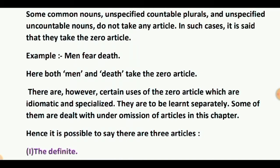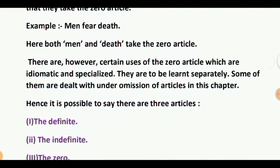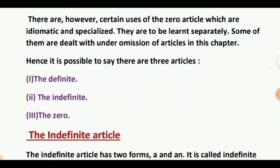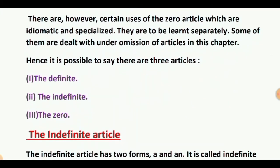Hence, it is possible to say there are three articles. First, the definite article. Second, the indefinite article. Third, the zero article. So we see that there are three kinds of article. First, the definite article. Second, the indefinite article A or AN. And third, the zero article or no article is used before the nouns.